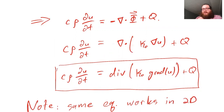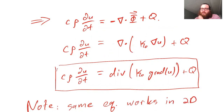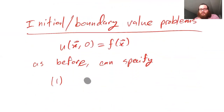Whenever we have PDEs, because we're taking into account both space and time — or just multiple variables — we need to specify an initial condition, since we're worrying about time. This is saying how heat flows in time, so the question is: how does heat start? What is your starting configuration? So what we're going to talk about next are initial and boundary value problems — the initial and boundary conditions that give us a well-posed problem to solve.